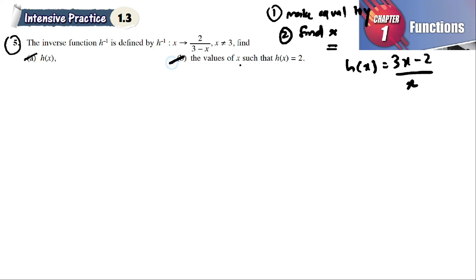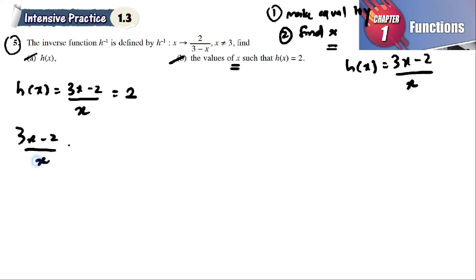Part b: find the values of x such that h(x) equals 2. We have h(x) equals (3x minus 2) divided by x, and we set this equal to 2. So 3x minus 2 equals 2x.